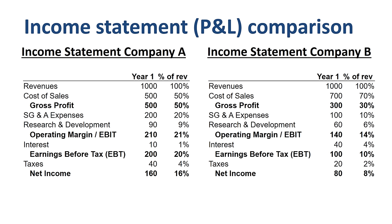Let's see what the financial ratios tell us. Company A has a gross profit margin of 50%, company B of 30%, so the gross profit margin is 20 percentage points higher for company A. Company A makes far more margin than company B on the products or services it sells.